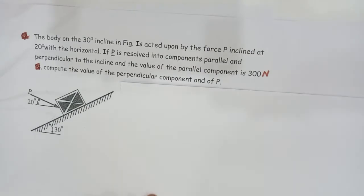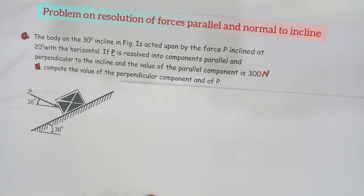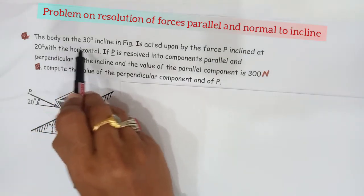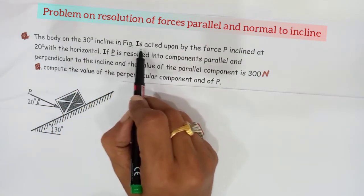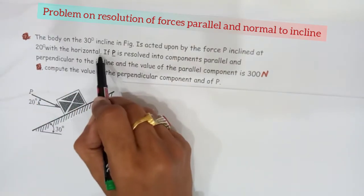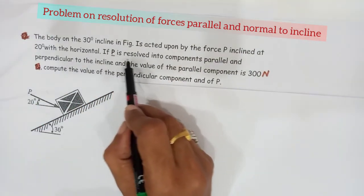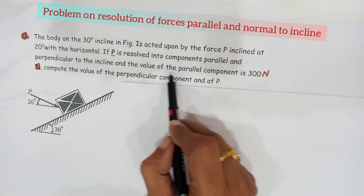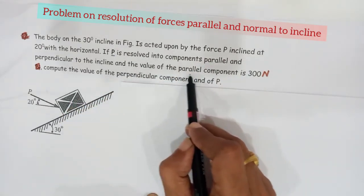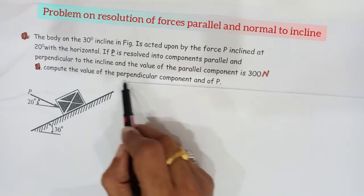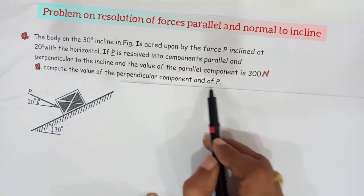We'll solve another problem where a body is placed on an incline. The body on a 30-degree incline is acted upon by force P inclined at 20 degrees with the horizontal. If P is resolved into components parallel and perpendicular to the incline, and the value of the parallel component is 300 newtons, compute the value of the perpendicular component and of P.